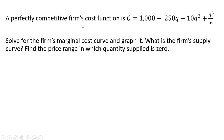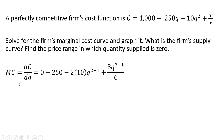A perfectly competitive firm's cost function is given by the following equation. We want to solve for the firm's marginal cost curve and graph it. We're going to talk about what the firm's supply curve is and then find the price range at which the quantity supplied is zero. To get marginal cost, we're going to take the derivative of this cost equation with respect to q, the quantity of output.